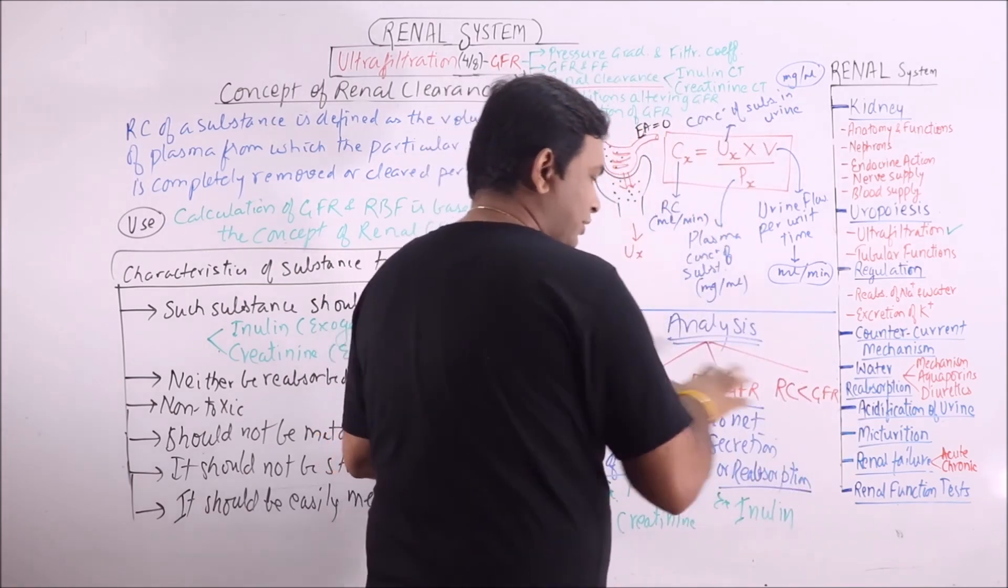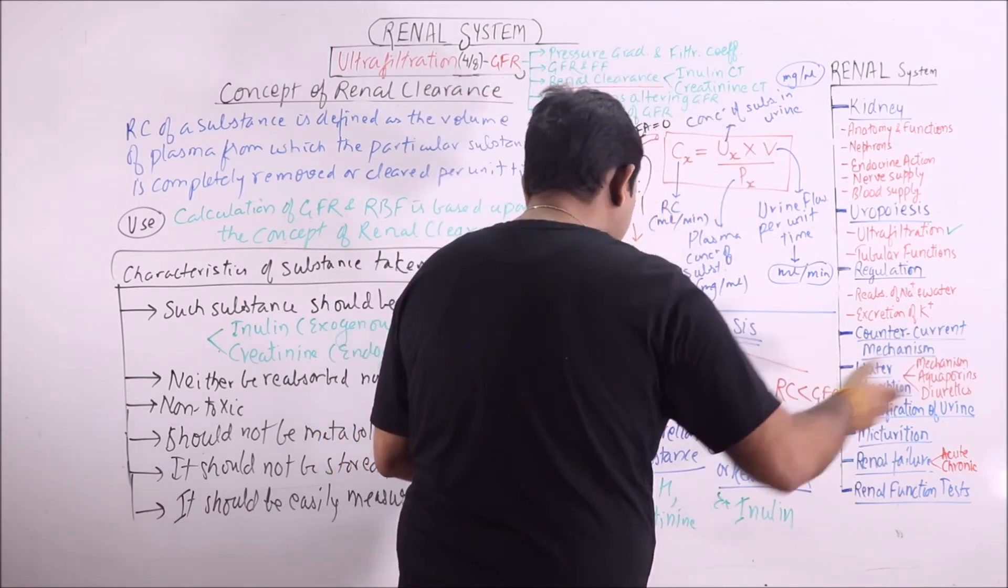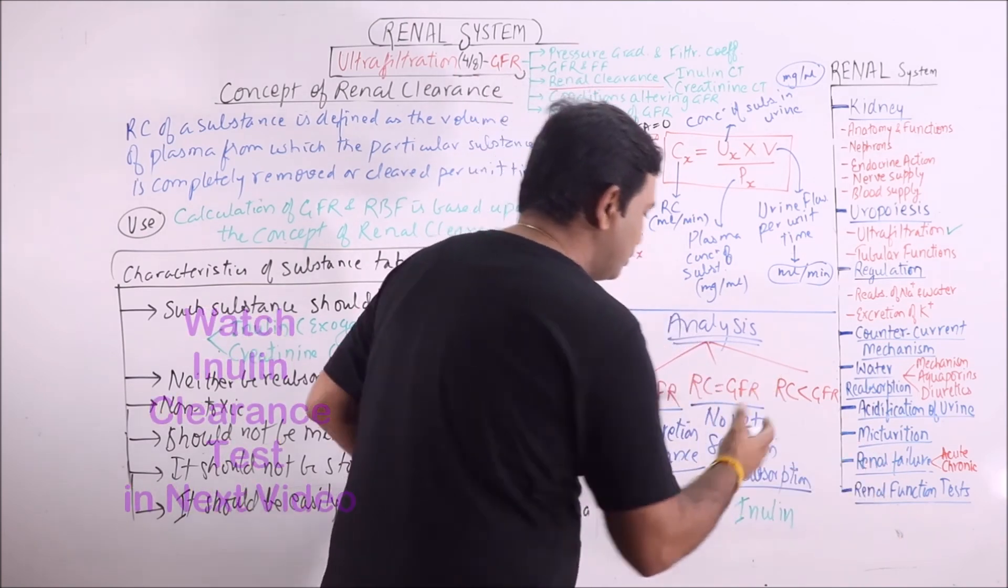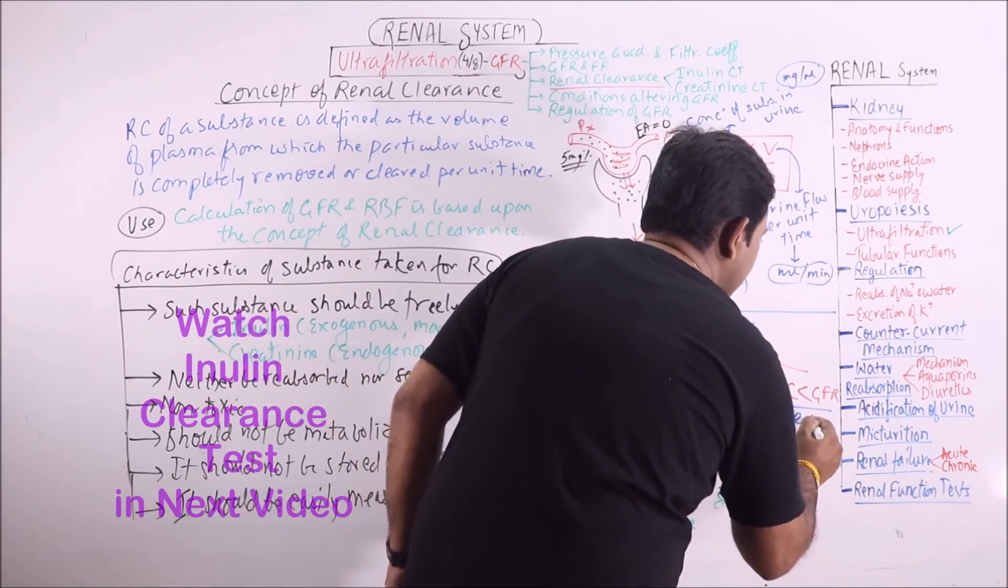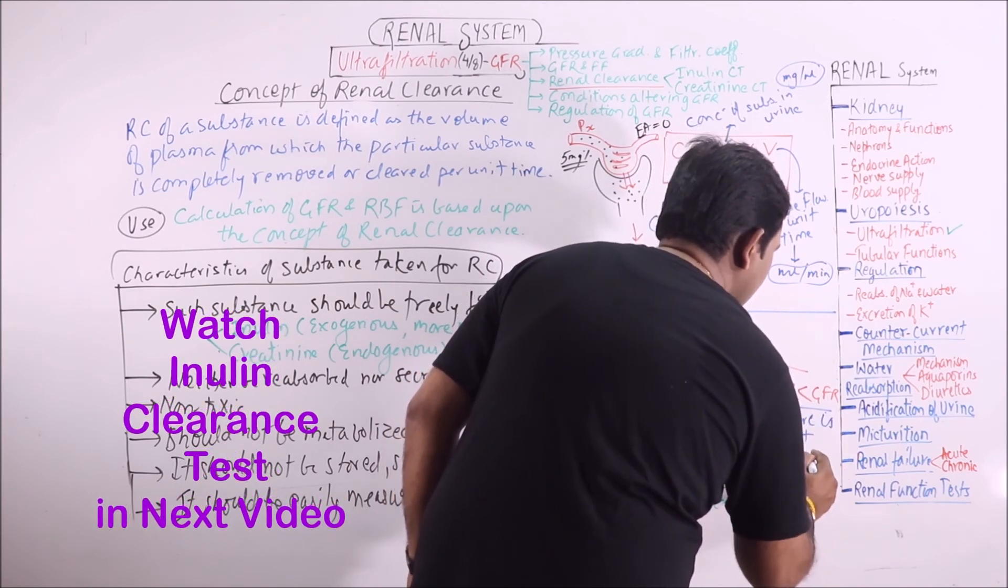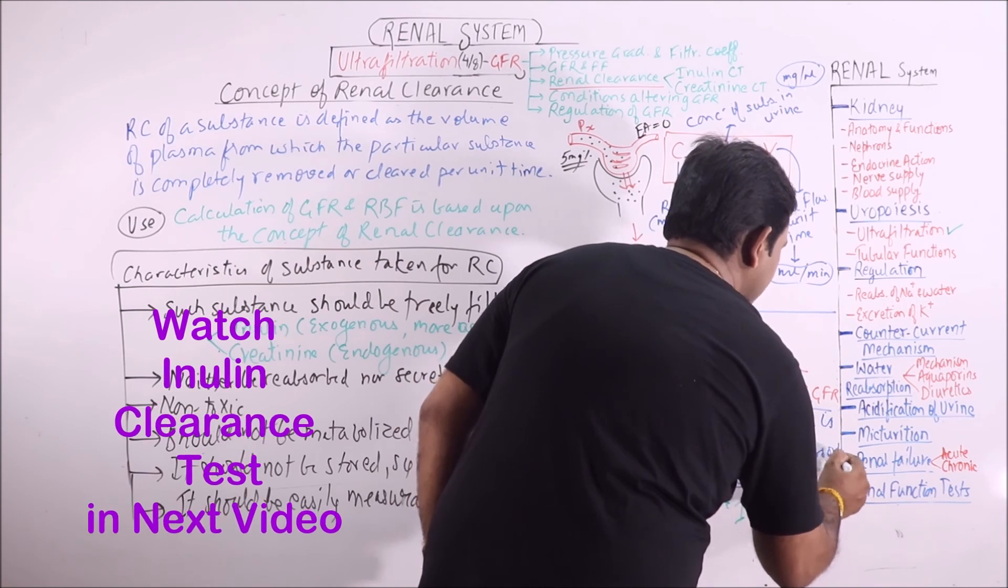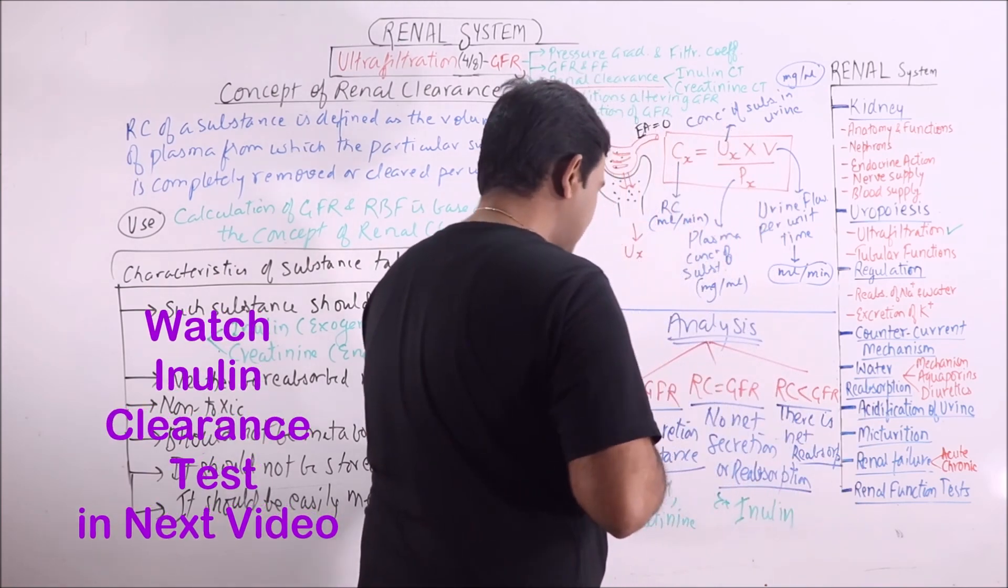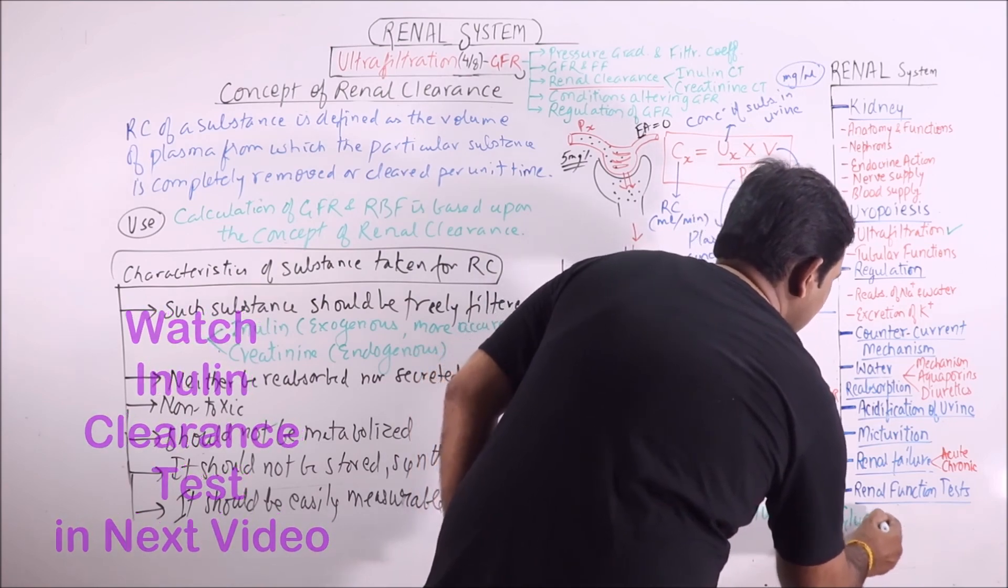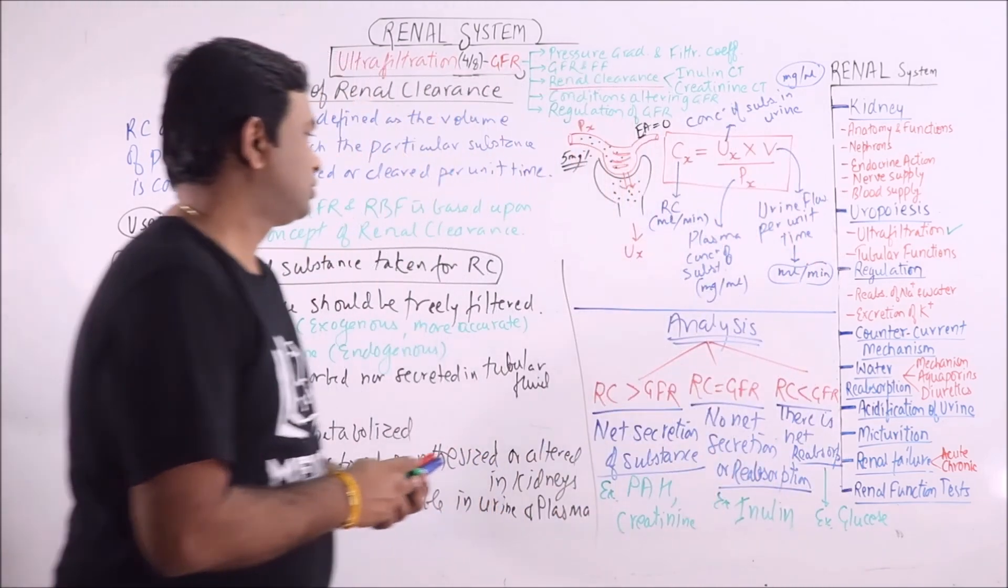If the renal clearance is less than GFR, it means that whatever is filtered is also reabsorbed. That is why excretion is less than the filtered value. So there is net reabsorption of that substance. An example of such substance is glucose.